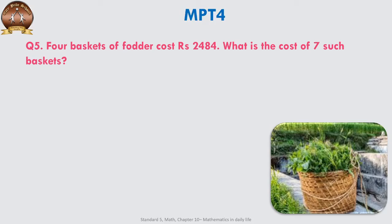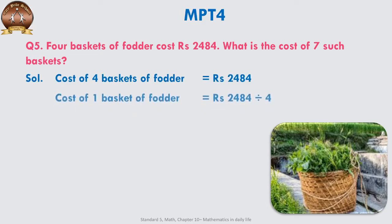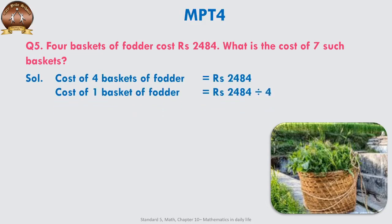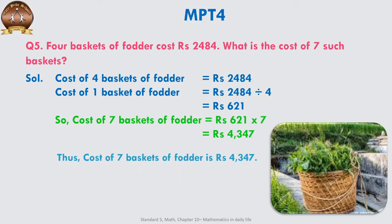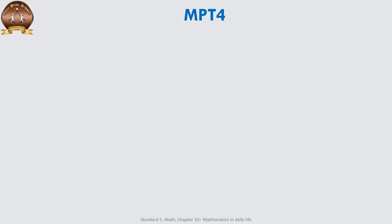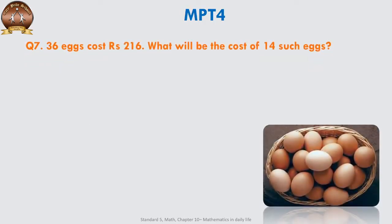4 baskets of fodder cost ₹2484. What is the cost of seven such baskets? Cost of four baskets of fodder = ₹2484. Cost of one basket = ₹2484 ÷ 4 = ₹621. Cost of seven baskets = 621 × 7 = ₹4347. Thus, cost of seven baskets of fodder would be ₹4347.